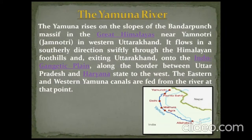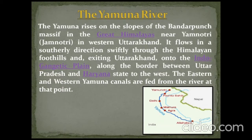The Yamuna River rises on the slopes of the Bandar Punch massif in the Great Himalayas near Yamunotri in western Uttarakhand. It flows in a southern direction swiftly through the Himalayan foothills, exiting Uttarakhand onto the Indo-Gangetic plain along the border between Uttar Pradesh and Haryana state to the west. The eastern Yamuna canals are fed from the river.